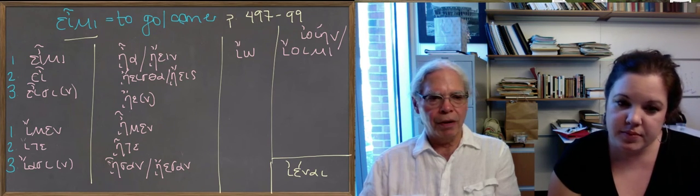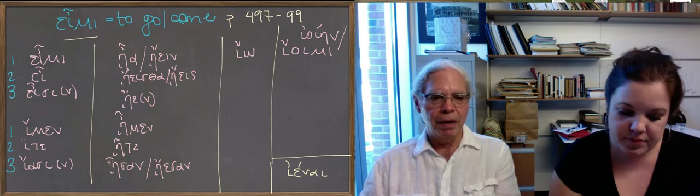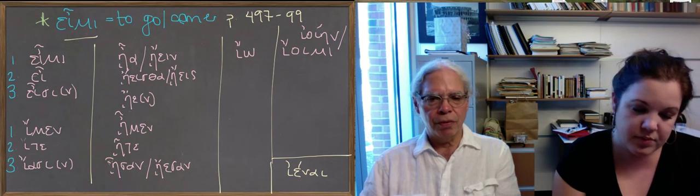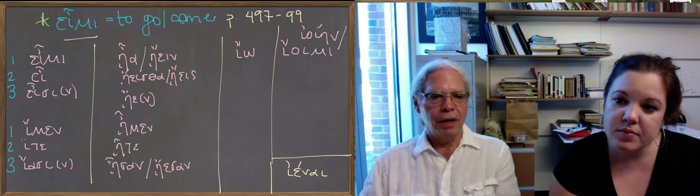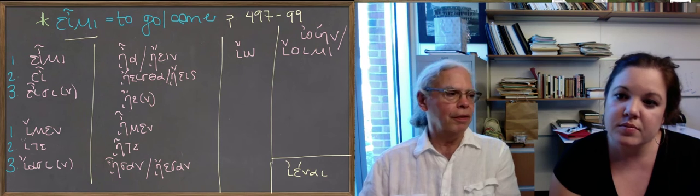Notice that the first person singular of the present active indicative, εἶμι, has a circumflex over the ει. That's because it's a regular toned word. It means go, okay, and it's the same as Latin eo, ire.